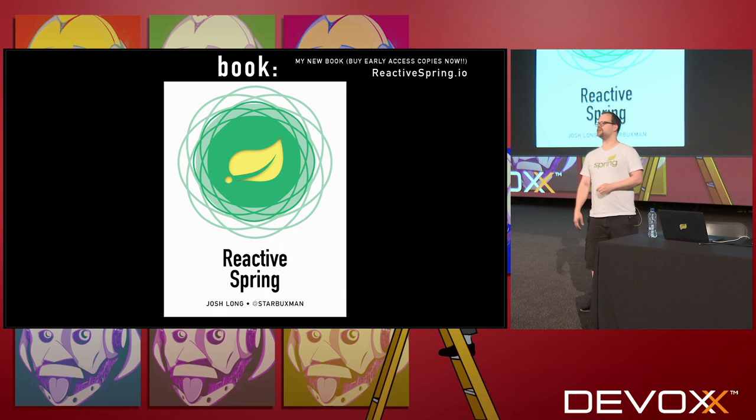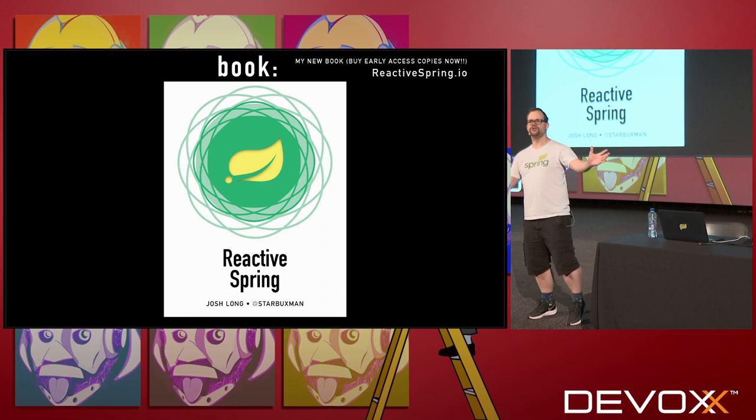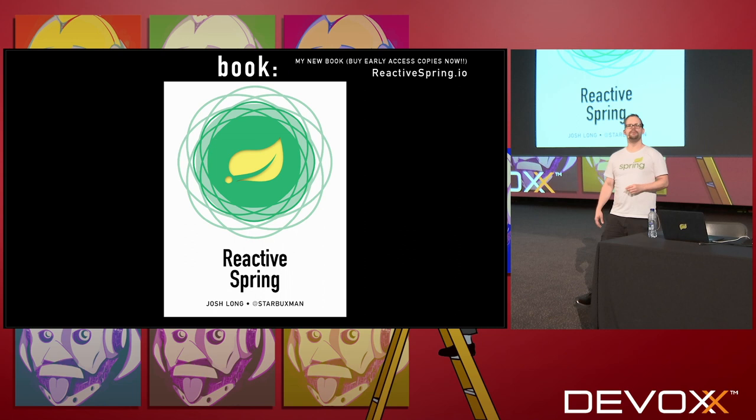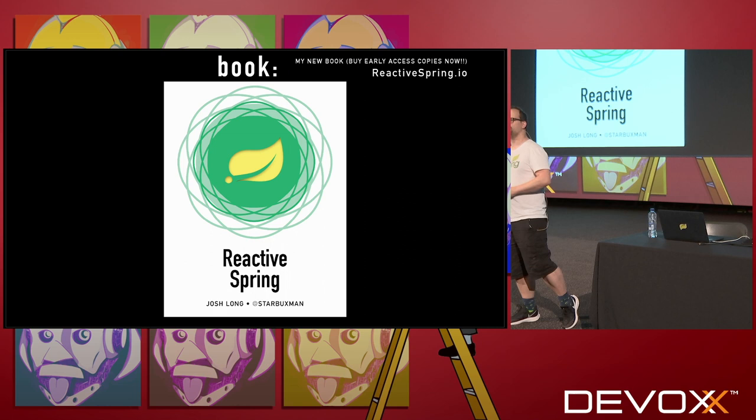We're going to talk about a lot of that today here together. So we're going to talk about testing. What I care about is how to build applications that I can move to production. Ultimately, what I care about is production. As I always say, production is the happiest place on earth — it's better than Disneyland. But if you haven't been to production, it can be a little intimidating figuring out how to get there.